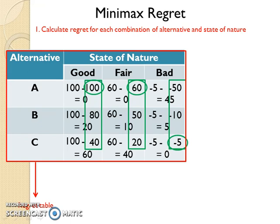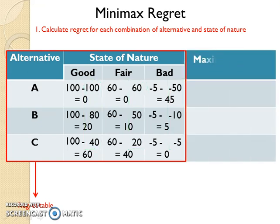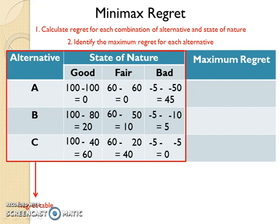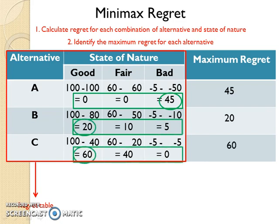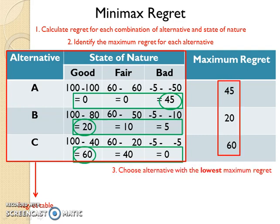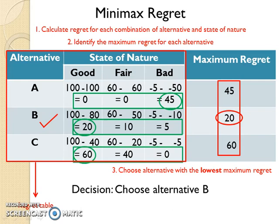After regrets have been calculated, add a column to the Regret table, name it as maximum, and identify the maximum regret for each alternative. For example, for alternative A, the maximum regret is 45, so write 45 in the column maximum. Do the same for the other alternatives. Next, among all these maximum regrets, identify the lowest value. Here the lowest value is 20, therefore the decision is to choose alternative B.